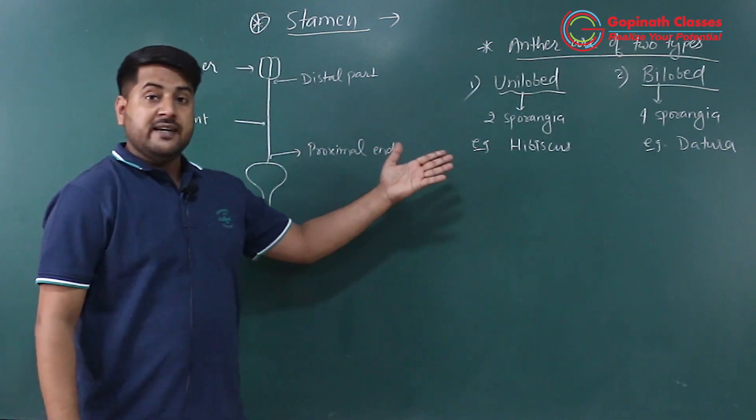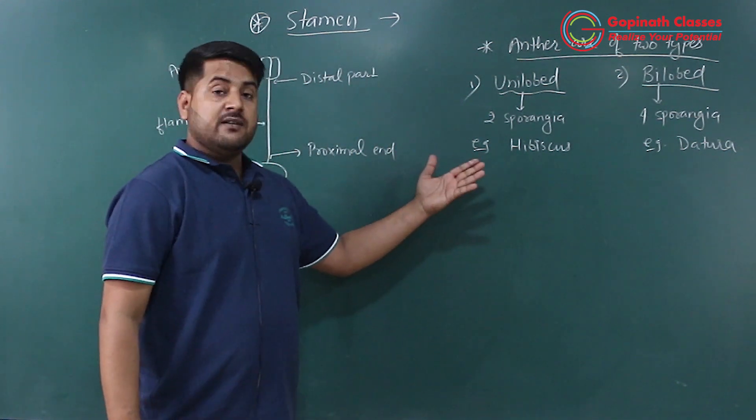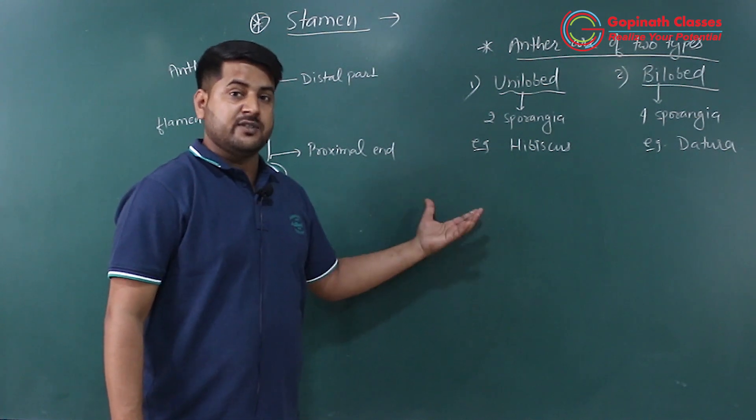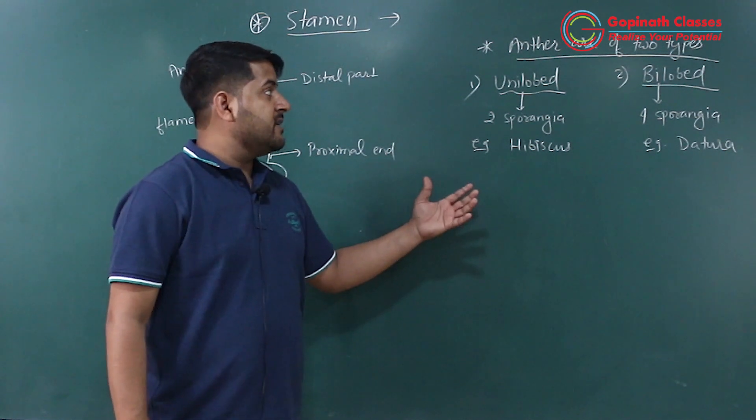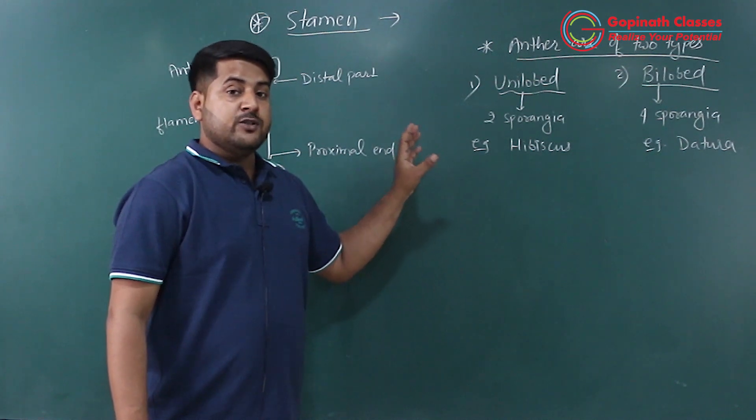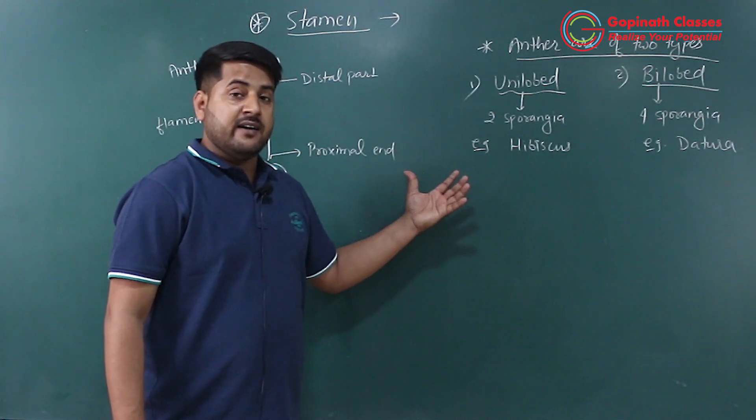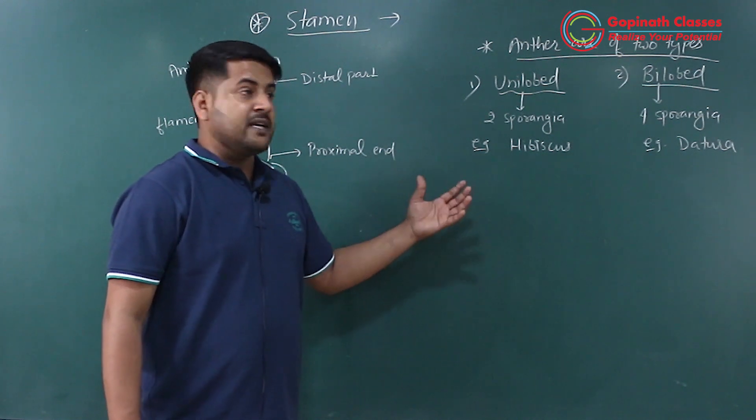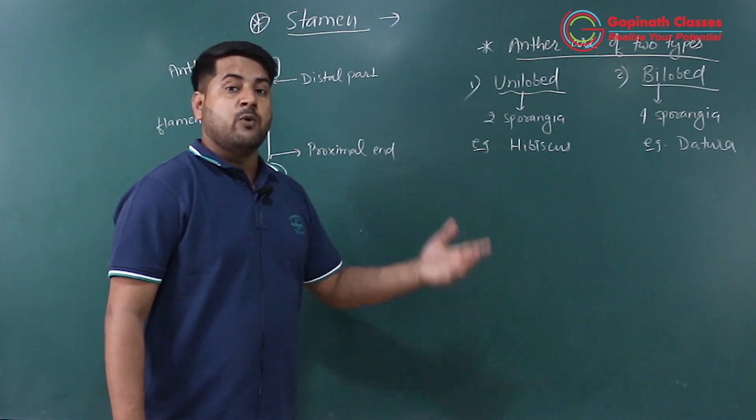These are the anther's two main types. When we see how many pollen grains can be made by bilobed or unilobed, we have to count on that. We have to see that the anther is unilobed or bilobed. If you know this, then we can calculate how many pollen grains will be made.